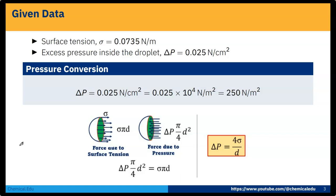Now if we do the force balance, force due to surface tension equals force due to pressure. So del P times pi by 4 D squared equals sigma pi D. From here, we will get that formula: del P equals 4 sigma by D.